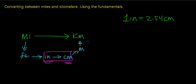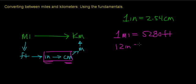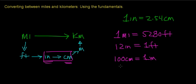Let's list a few unit relationships that you may already know. One mile is exactly equal to 5,280 feet. There are 12 inches in one foot. One inch equals 2.54 centimeters. 100 centimeters equals one meter. And 1,000 meters equals one kilometer. We're going to use all of this information to make the conversion between units of miles and units of kilometers.